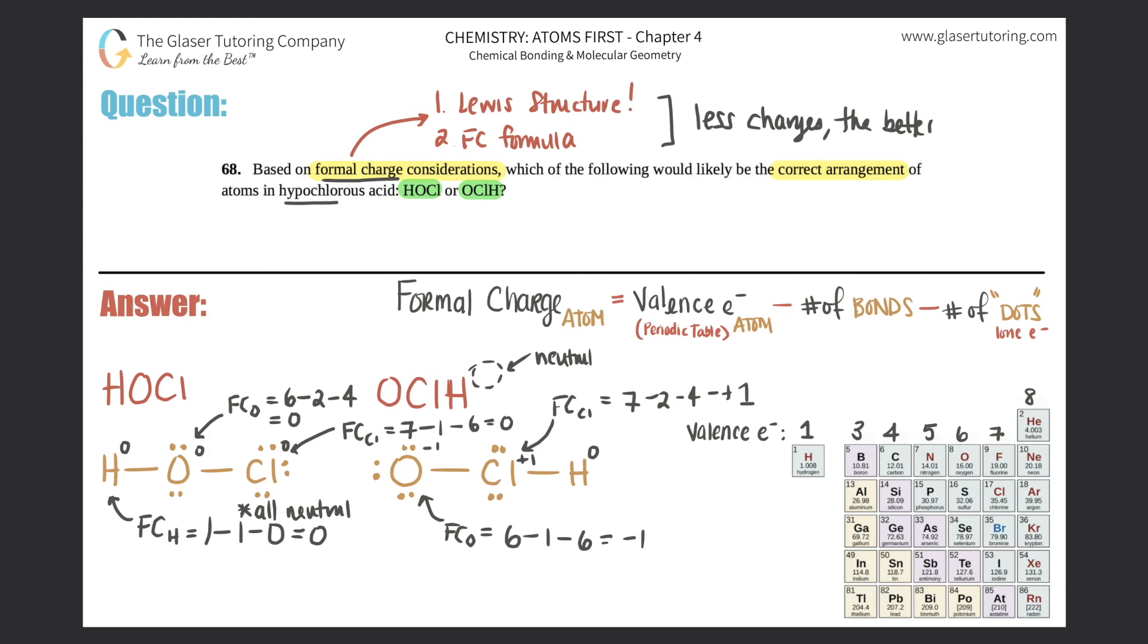Which one would be hypochlorous acid? It would be HOCl because every single atom in that molecule is neutral—it's happy, it's perfect—as opposed to OClH, which has the oxygen being negative one and the chlorine being positive one. That's the answer. We just had to find the formal charge, know what formal charge differences meant, and know that less charge is better.